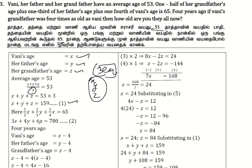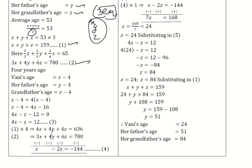Multiplying through to clear fractions gives us equation 2: 6x plus 4y plus 3z is equal to 780. For equation 3, four years ago the grandfather was four times Vani's age: z minus 4 is equal to 4 times x minus 4, which gives 4x minus z minus 12 equals 0. This is equation 3.